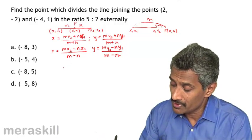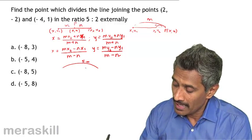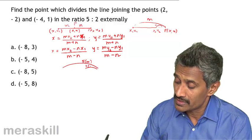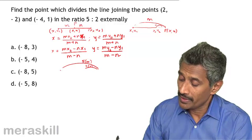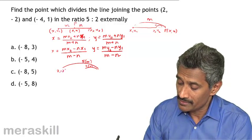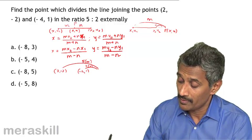So we just draw the diagram here. You have this is 5 which is M and you have 2 which is N. So this point is (x1, y1), that is (2, -2), and this is (x2, y2), (-4, 1).